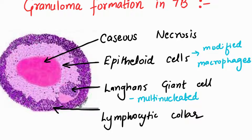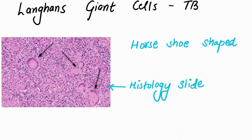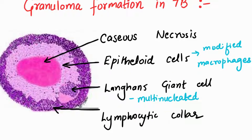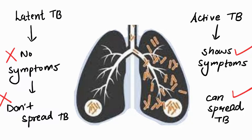The granuloma has caseous necrosis in the middle, followed by Langhans giant cells — remember it's Langhans, not Langerhans. You can also see TB-modified macrophages known as epithelioid cells, and your lymphocytes lie in the outermost layer. At this stage, TB has become latent, meaning it's waiting for the right opportunity to cause infection.